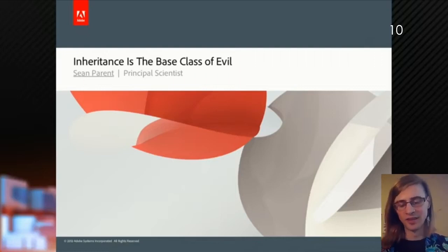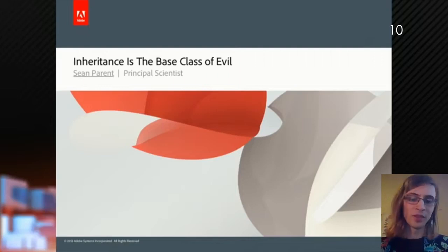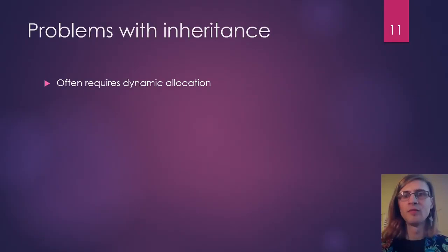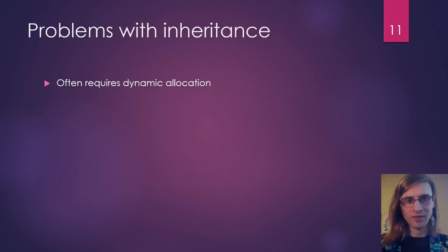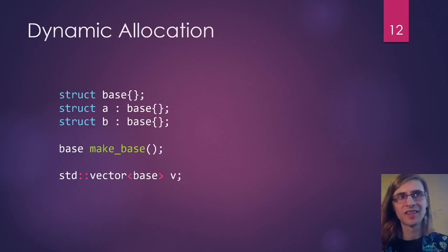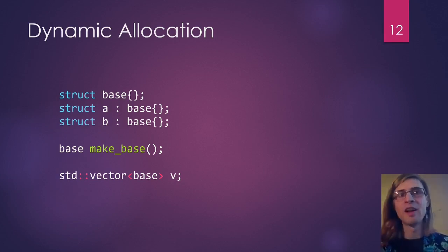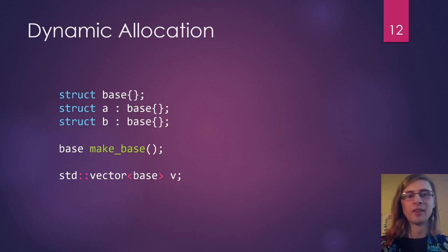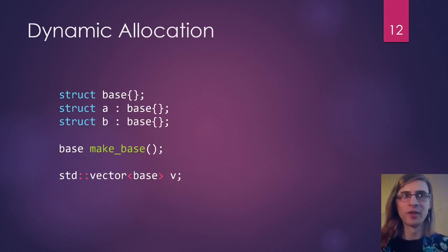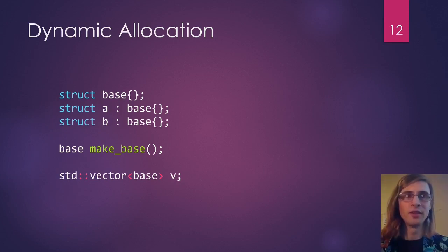I'm going to implement better solutions. One of the main problems with inheritance is that you often get dynamic allocation where you might not need it. If we have a hierarchy with a base class and A and B which derive, we can't have a factory function which returns base by value. We can't store bases in a vector unless we're fine with slicing off the derived part. This is called slicing — if you return a polymorphic object by value, it gets rid of the polymorphic part and you're left with just the base.